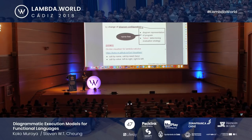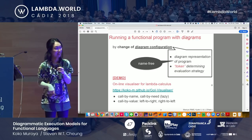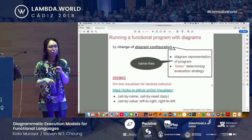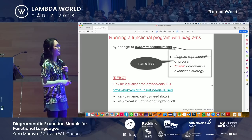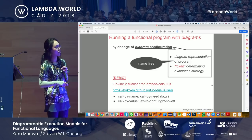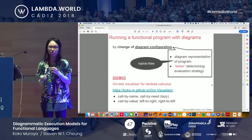The nicely colored visualizer we saw is Stephen's, with a bit of extension to the lambda calculus. Mine is for pure lambda calculus and supports several evaluation strategies. There's a strict distinction between left-to-right and right-to-left because we shouldn't confuse the token.